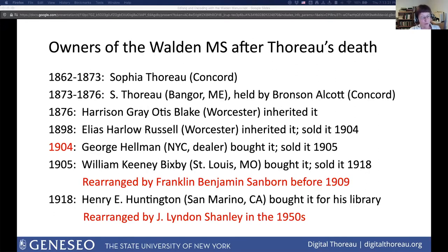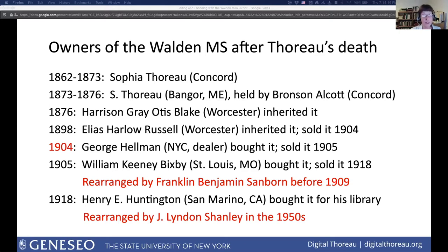The order of leaves in the Walden manuscript probably remained close to Thoreau's — whatever that was — until the dealer George Hellman bought it with other Thoreau manuscripts from E. H. Russell in 1904. After that there were two major rearrangements. William Bixby acquired the Walden manuscript along with hundreds of other Thoreau manuscripts in 1905. He hired Frank Sanborn to examine, identify, and transcribe these manuscripts. Sanborn went through the leaves of the Walden manuscript and numbered them to indicate the location of their contents in an 1889 reprint of Walden, then ordered the manuscript leaves according to those page numbers — all the leaves with page one content, followed by page two, and so on. We'll see some of Sanborn's numbers in a minute.